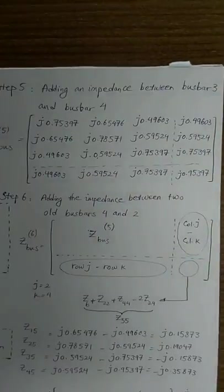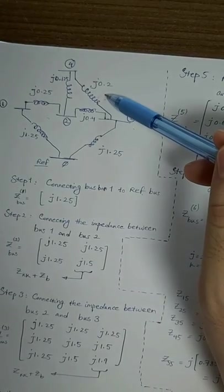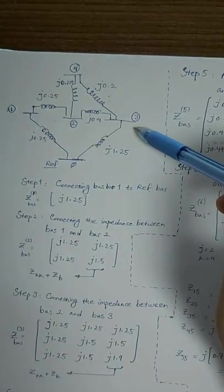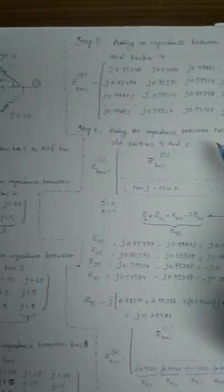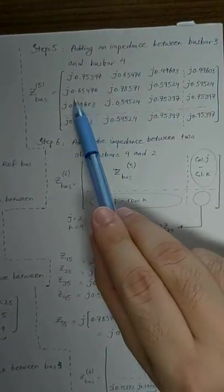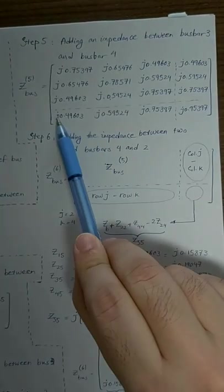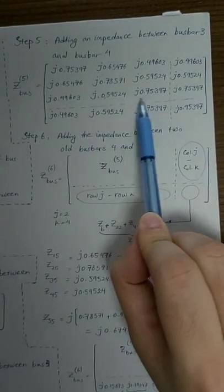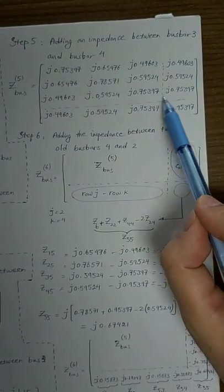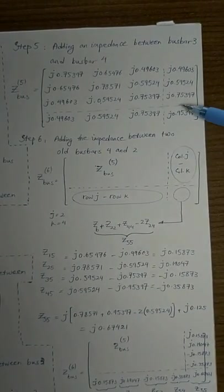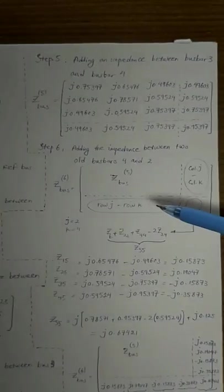The next step is adding a new impedance between bus bar three and bus bar four, which is J0.2. This falls into category two again — adding a new impedance between a new bus bar and an old bus bar. According to category two, we repeat the original Z-bus matrix obtained previously, then add row K and column K, where K is bus bar three. For the diagonal parameter, we use Z_KK plus Z_B = Z_KK + J0.2. This gives us a new bus bar four.